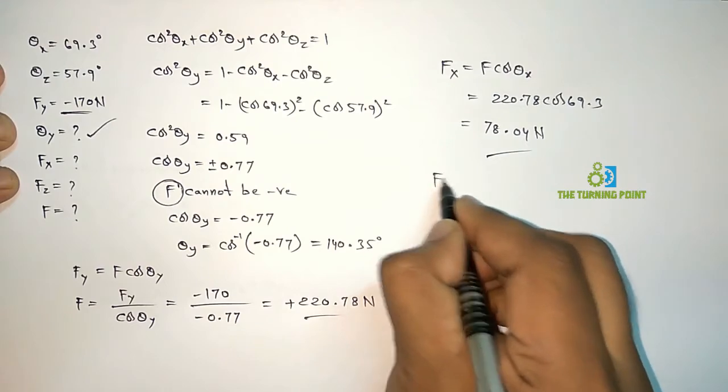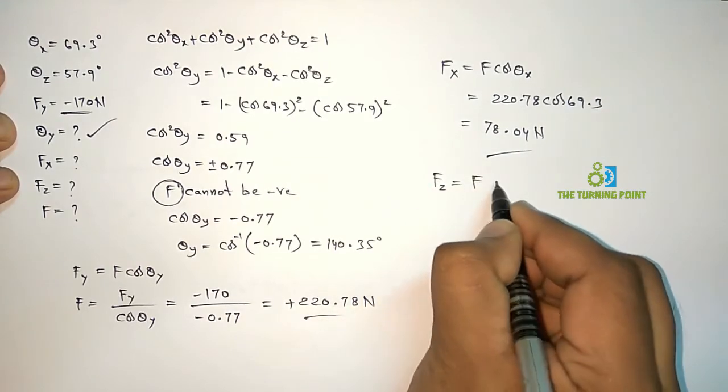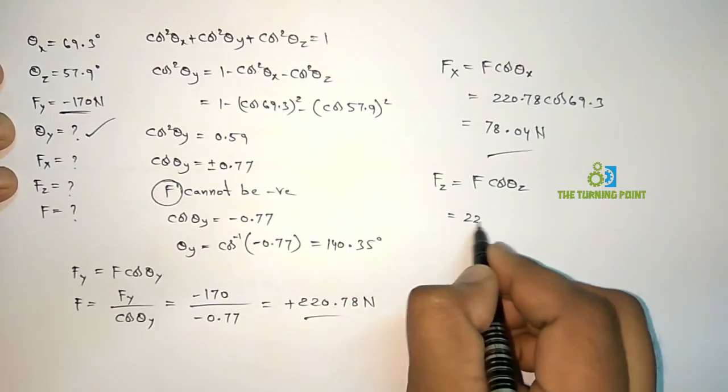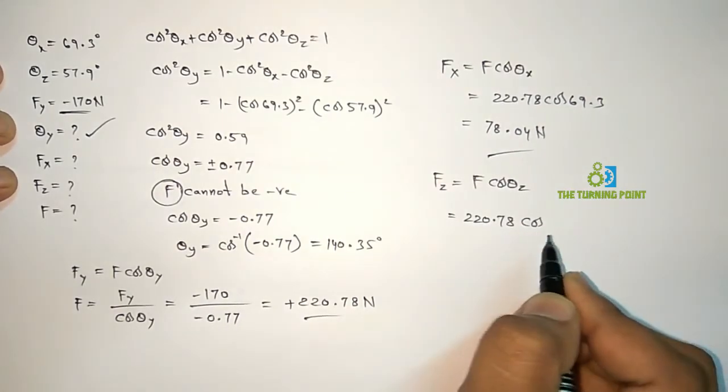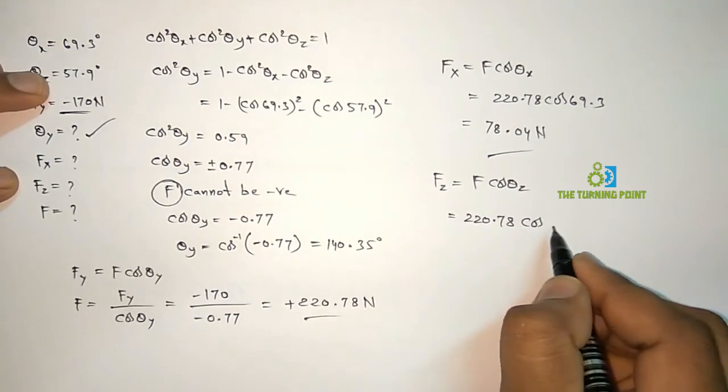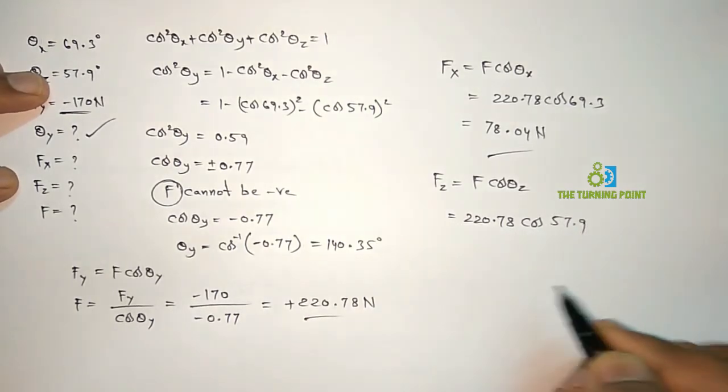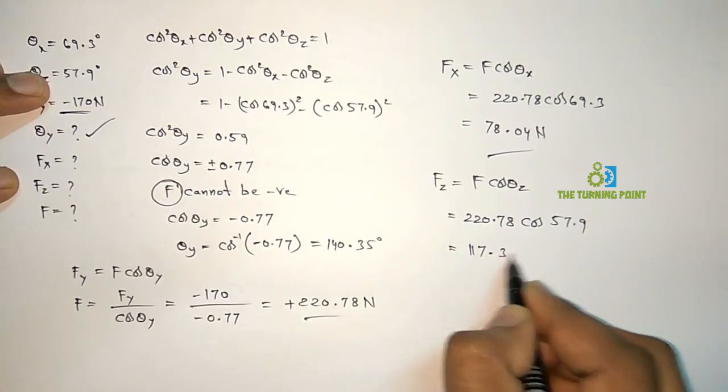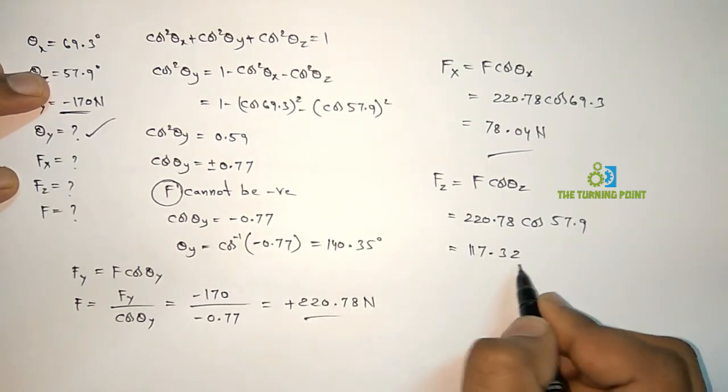Now if I want to find Fz, Fz is F cos Theta z. F is 220.78. Cos Theta z is 57.9, that is given in the question. From that I can calculate the value of Fz. I am getting 117.32 N.